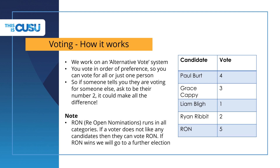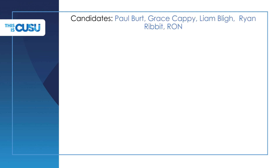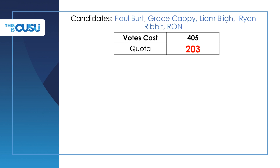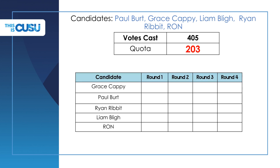For the purpose of the demonstration, I've put myself as first choice, our elections mascot Ryan Ribbett as second, Grace as third, Paul as fourth, and finally RON as fifth. As you can see, we have had 405 votes in total for this election, which means any candidate getting 203 or more votes would automatically win, as this is over half the voting body, making up a majority. On the first round of voting, Grace got 95 votes, Paul got 60, Ryan got 122, I got 121, and RON got 7.